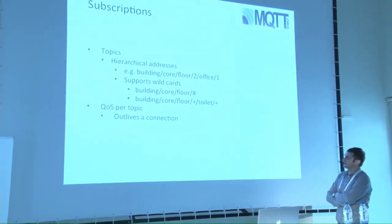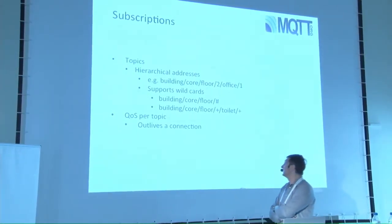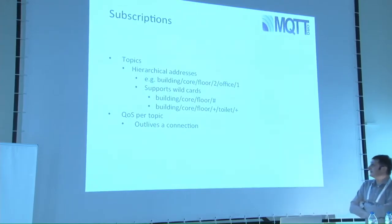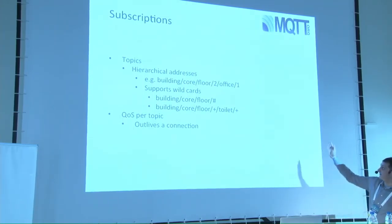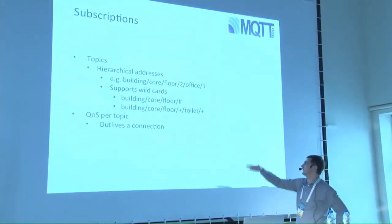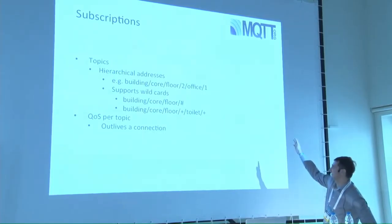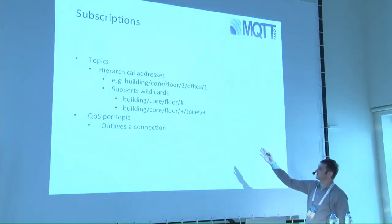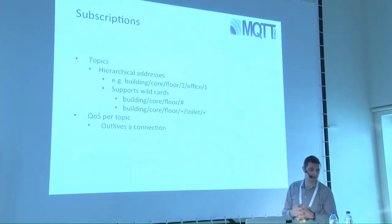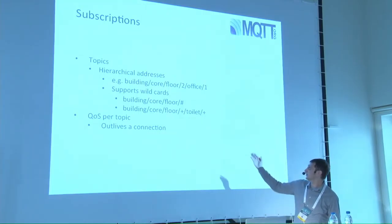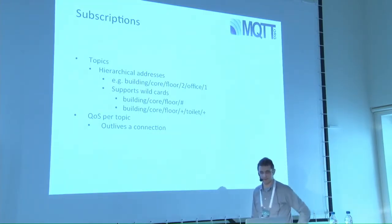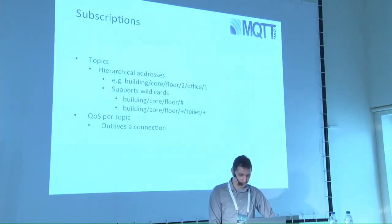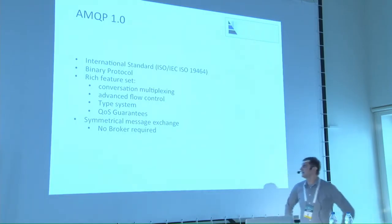MQTT is a publish-subscribe protocol defining topics as the main addressing scheme. It provides a hierarchy of addresses, so you can arrange devices by assigning them a particular address within a hierarchy — for example, a building, floor two, office one, then devices. With this model you can address a single device if needed, but you can also use wildcards to provide one-to-many communication. For example, you can easily address all devices on the second floor using the appropriate wildcard address.